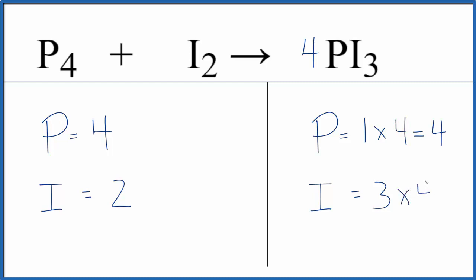Three times four, that'll give us 12, but that's okay because now if we put a six in front of the I2, two times six, that gives us 12.